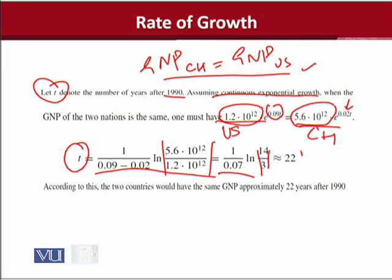And after simplifying these values, we have 22. So this 22 now should be interpreted, and it's easy to interpret, because this is what we were looking for. We were looking for that time period which would actually achieve the convergence between the GNP of China and U.S. It will take 22 years after 1990 for the GNPs of China and U.S. to become equal.